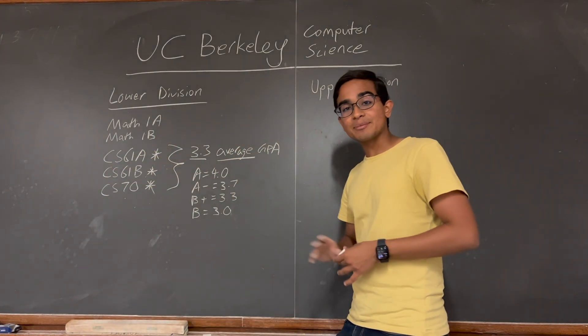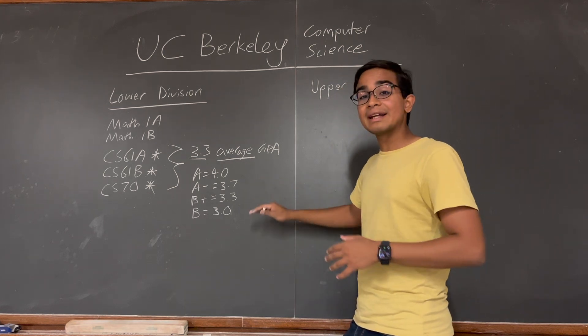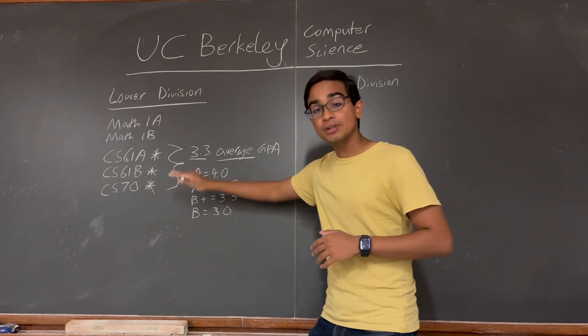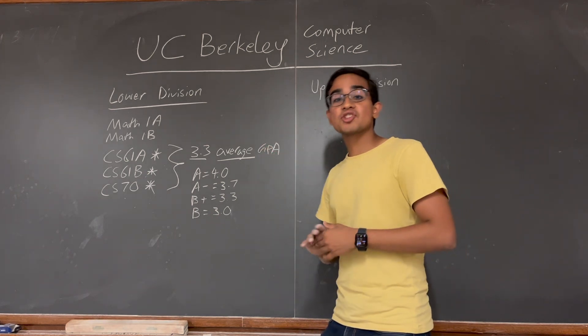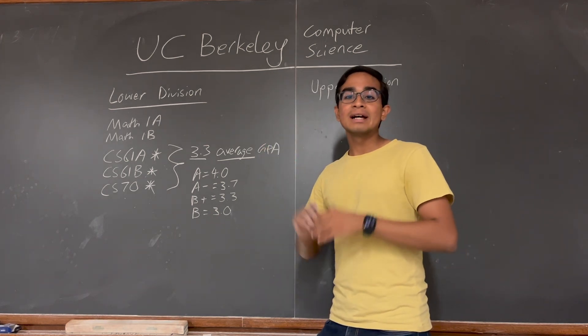Here's how grading works at Berkeley. This means that you need to get an average GPA of B plus across these three classes in order to declare the computer science major. Now while this is challenging, it is definitely doable and I'm sure you can do it.